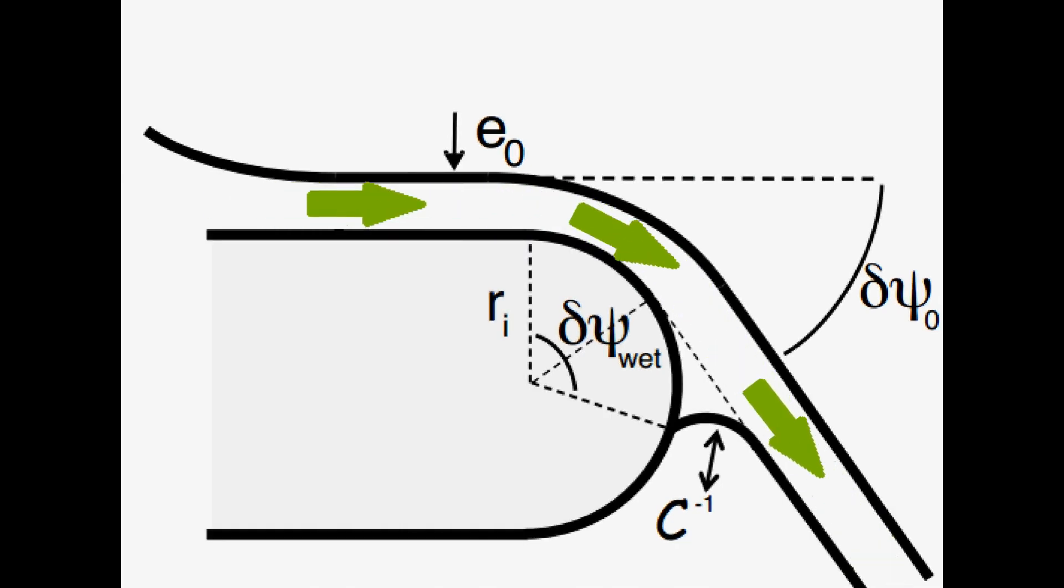Knowing that wettability is a fluid-solid contact phenomenon, one also has to take the spout's geometry into account. Here the roundness of the spout is described by the parameter RI. Furthermore, delta phi zero is the angle the stream gets deflected.